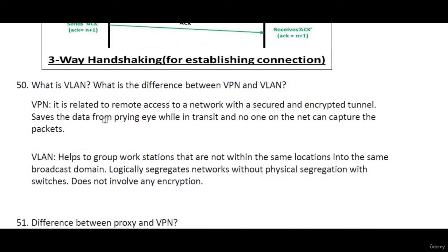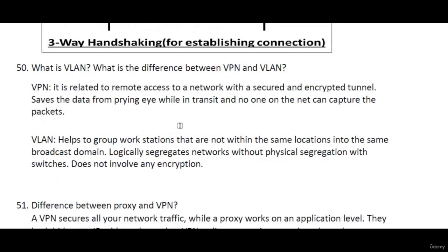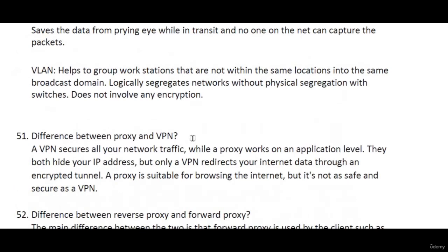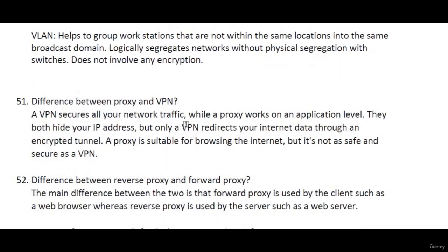What is the difference between VPN and VLAN? A VPN is related to remote access to a network through a secure encrypted tunnel, protecting data from interception in transit. A VLAN (Virtual LAN) groups workstations not in the same location into the same broadcast domain and logically segregates networks without physical segregation using switches. VLAN does not involve encryption.